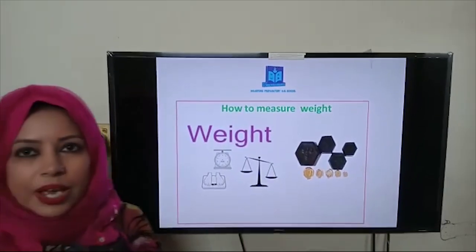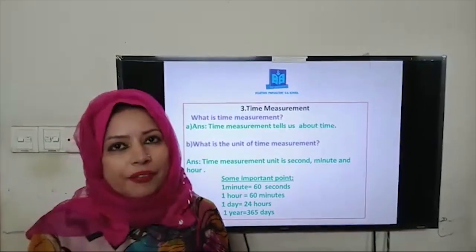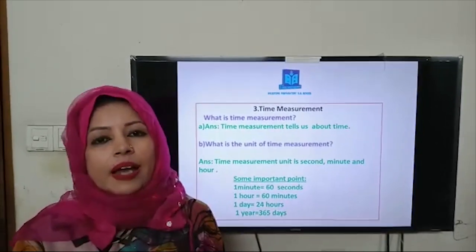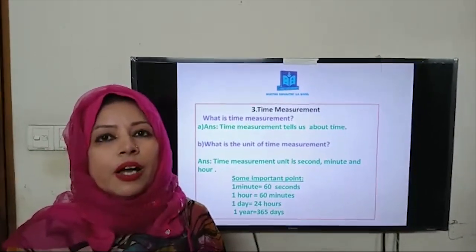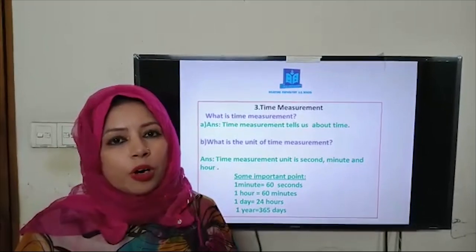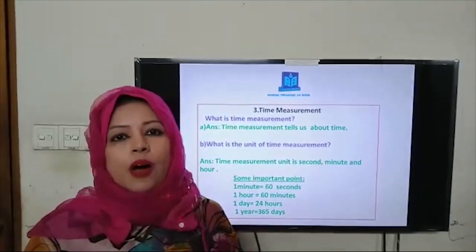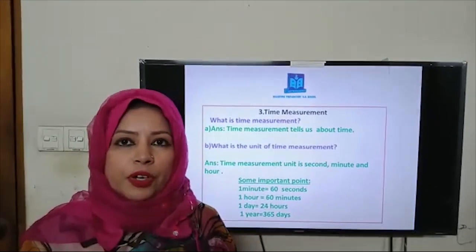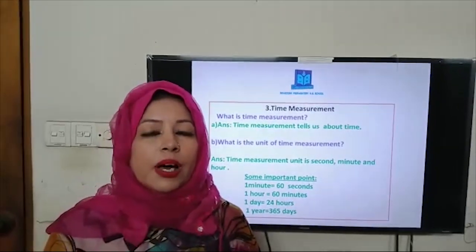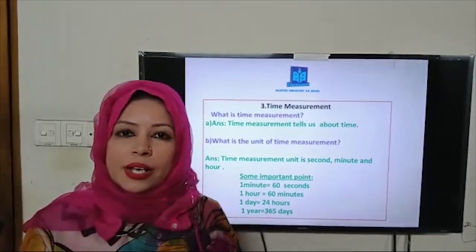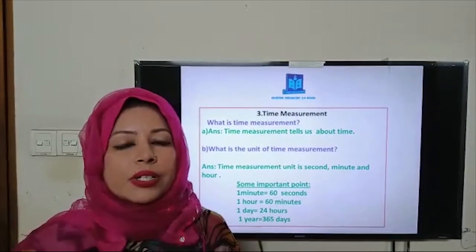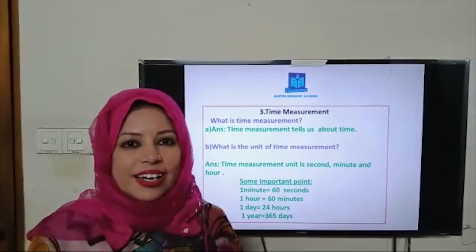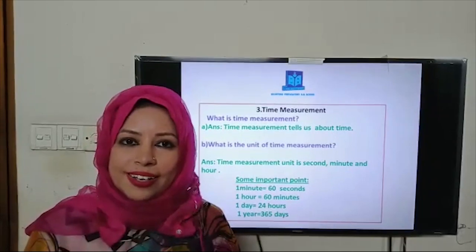Have you understood the weight measurement, students? Which things we have to weigh? I hope you understand now. Keep in mind the formula: 1 kg equals 1,000 grams. And the unit of weight measurement is gram or kilogram.